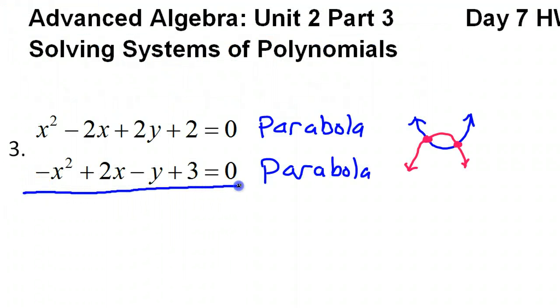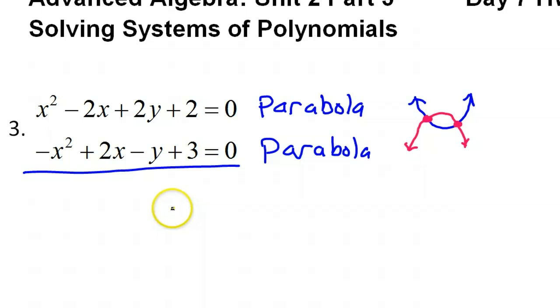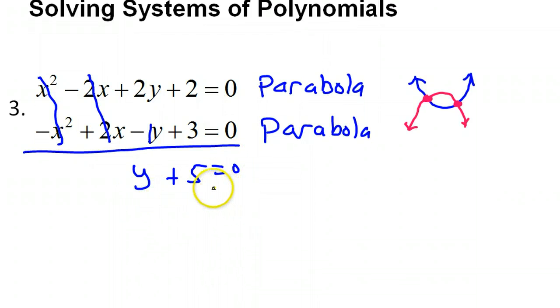So if I go ahead and put these together, combining like terms, these immediately cancel and these immediately cancel. So, I have 2y minus y, all right, so that's just y plus 5 equals 0. So, we can easily solve this for y by subtracting 5 from both sides. So, that'll give me y equals negative 5.